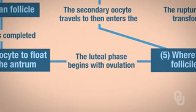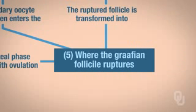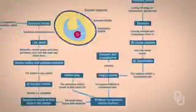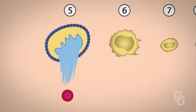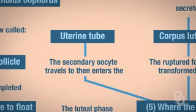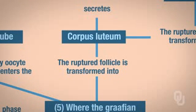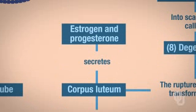Now we're starting the luteal phase — the last phase of the ovarian cycle. The Graafian follicle ruptures, and you can see from the diagram how the follicle is rupturing. The secondary oocyte enters the uterine tube — it's always the secondary oocyte that enters the uterine tube. What's left of the follicle gets transformed into what's called the corpus luteum. The corpus luteum is going to secrete estrogen and progesterone — always keep that in mind.